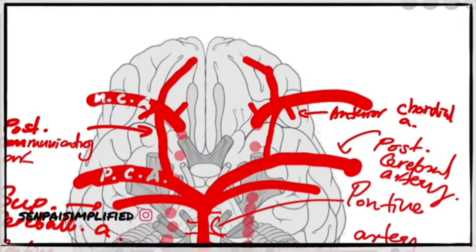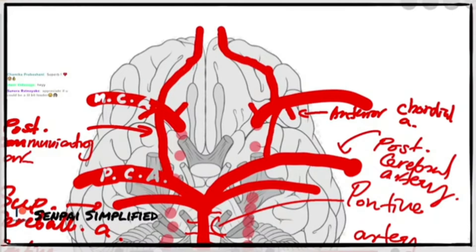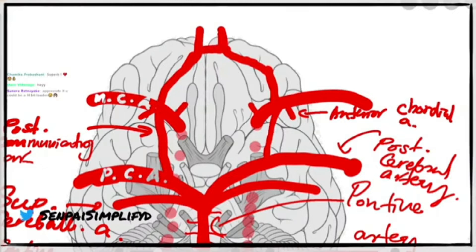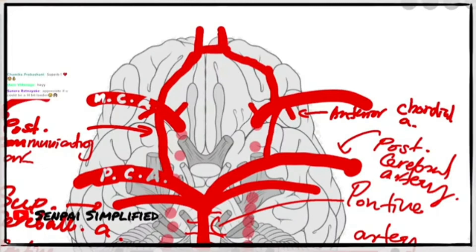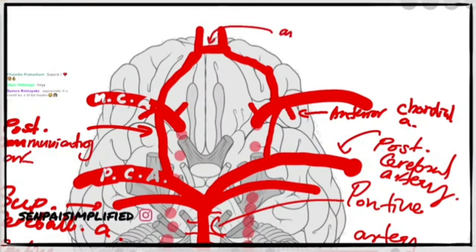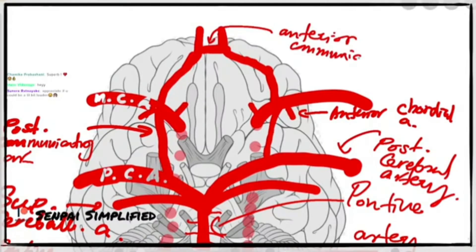Then you have another big branch that supplies the cerebrum, called the anterior cerebral artery, given off over here. They don't exactly join together — they are always separate but come closer. Over here you have something called the anterior communicating artery, similar to the posterior communicating artery, and this is called the anterior communicating artery.